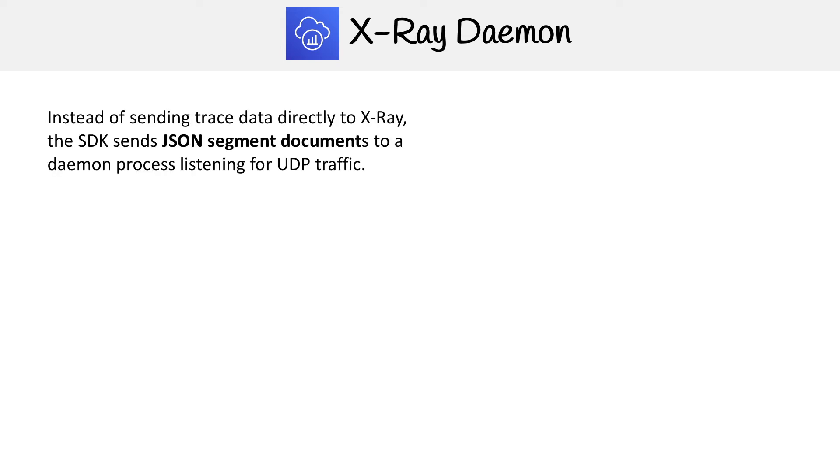Let's take a closer look at the X-Ray daemon. When we looked at the anatomy, we said we do not send segment data directly to the X-Ray API. Instead, we send it to the daemon, which buffers it and then sends it off to the X-Ray API. So instead of sending your traces directly to X-Ray, the SDK sends JSON segment documents — that's what segments are made of — to a daemon process listening on UDP traffic.